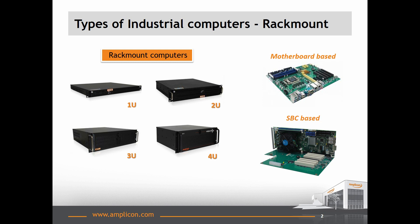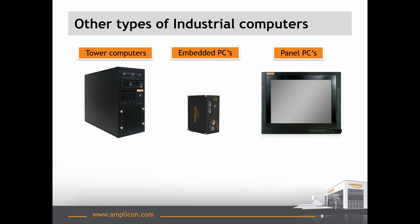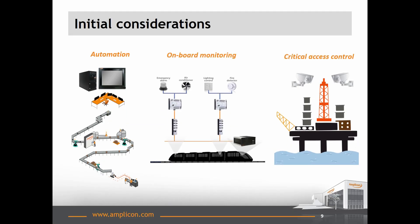SBC-based systems typically have far more slots, which means they are more expensive. Other popular forms include tower PCs, embedded PCs, and panel PCs. Tower computers give you the option to have a good number of expansion cards, as well as multiple hard drives and SSDs. Embedded computers are typically fanless, might have the capability to install two to three cards, and are typically small form factor, capable of being mounted by DIN rail or wall-mount. Panel PCs are an all-in-one computer and touch screen, designed to be mounted on the front of a panel. These often have aluminium bezels to protect them and allow an operator local access to control equipment without the need for a desk.